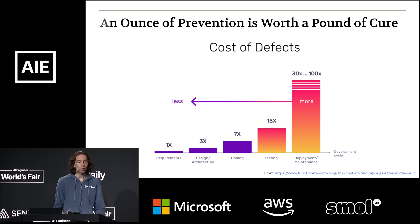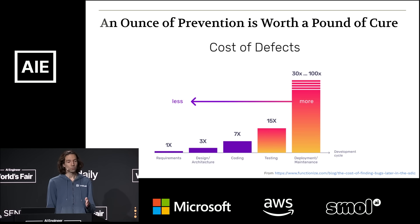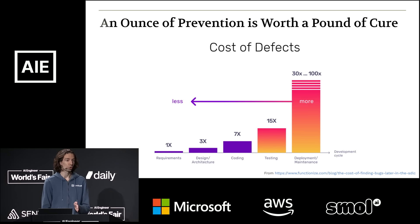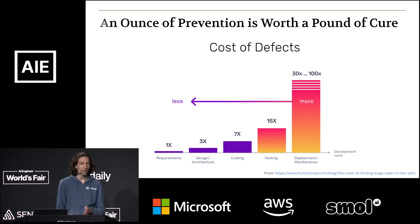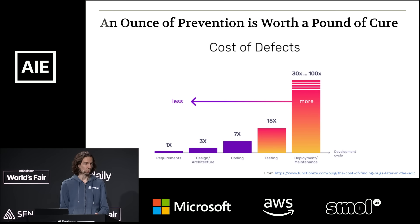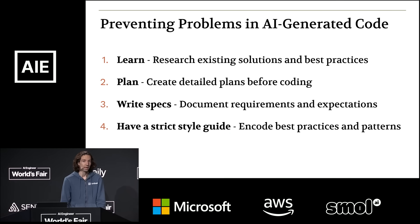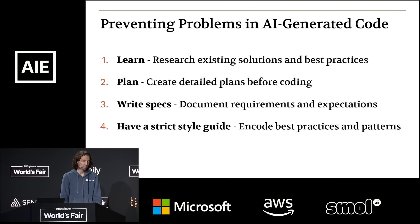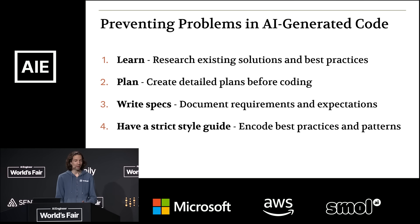What you want to do in the software development process is identify problems as early as possible. Sculptor does not work as a pull request review tool because that's much later in the process. Rather, we want something synchronous and immediate — giving you feedback as soon as you've generated code or changed a line, so you know right away if something is wrong. That's easier both for you and for the agent to fix. There are four ways we try to prevent problems in AI-generated code: learning, planning, writing specs, and having a strict style guide.